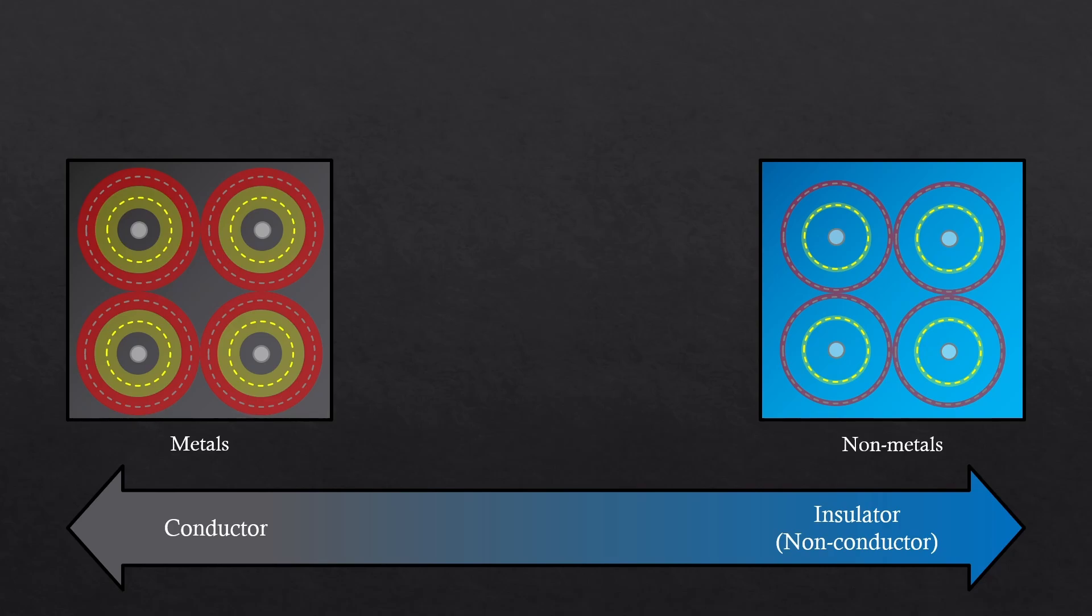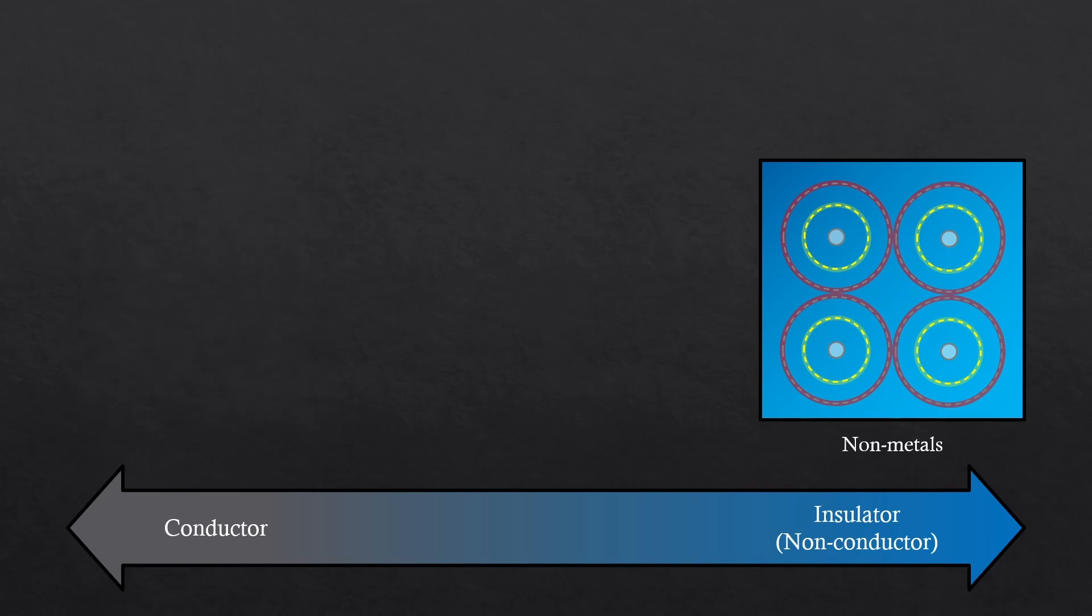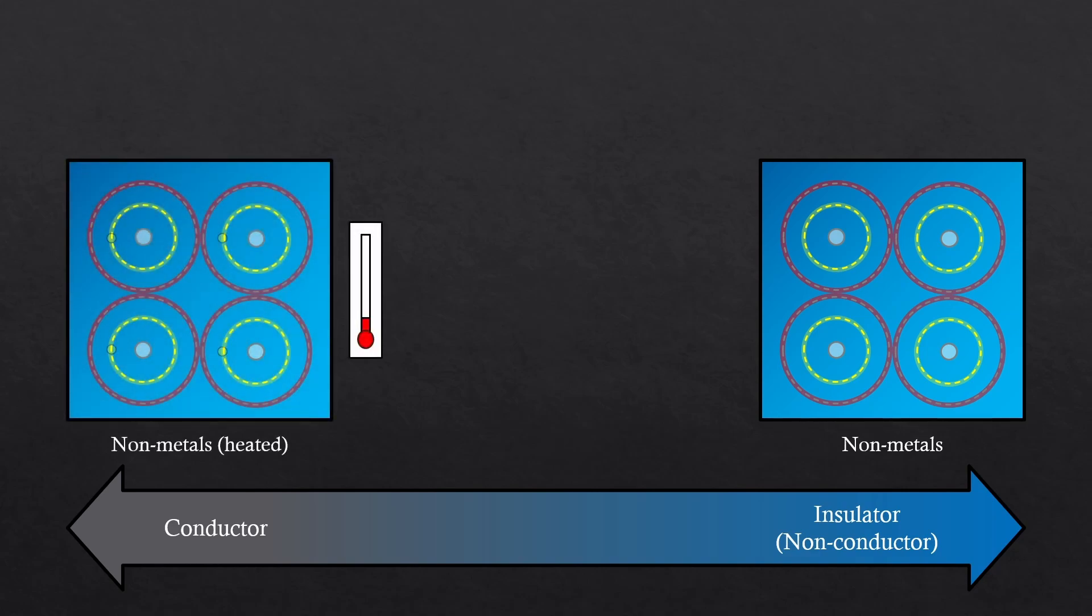However, this also means something. This means if electrons can somehow get to the conduction band, non-metals can also become conductors. How can we excite those electrons from their valence shells? Any good idea you have? You might have already guessed it. We can heat it up. There you go.